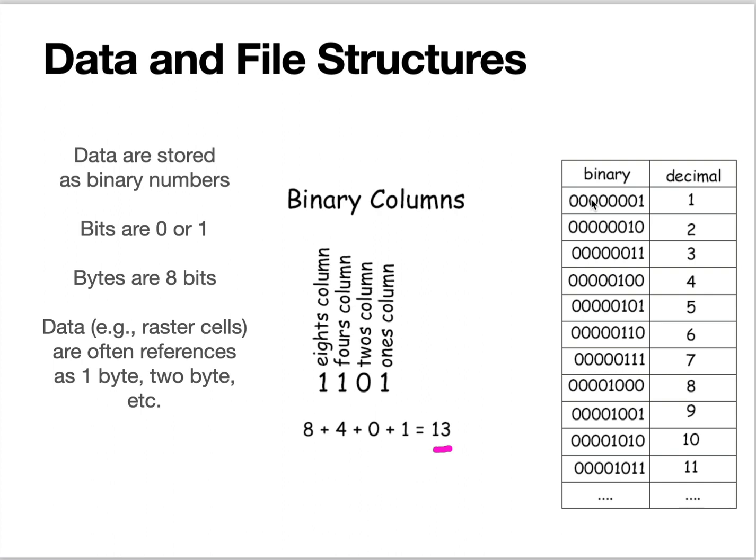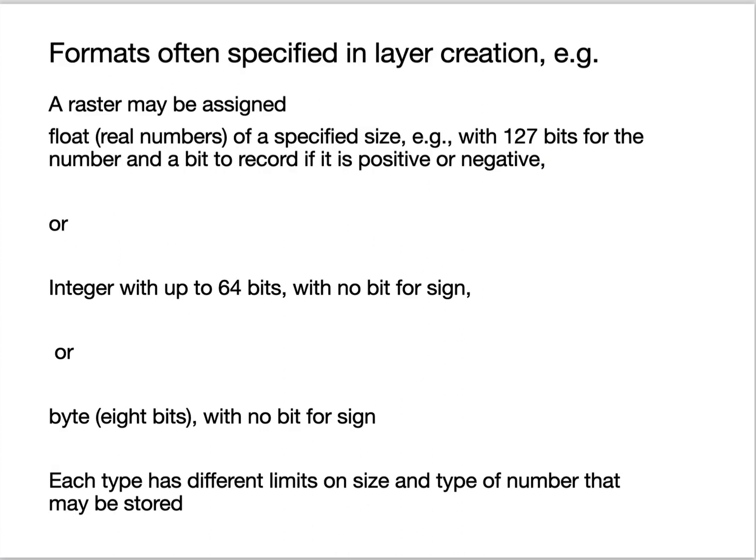So we can create basically any number in this binary system. But we often have to specify what we're going to store both in a raster or in a vector coordinate location or in the attributes associated with them. And the decision we make defines how we can treat that data.